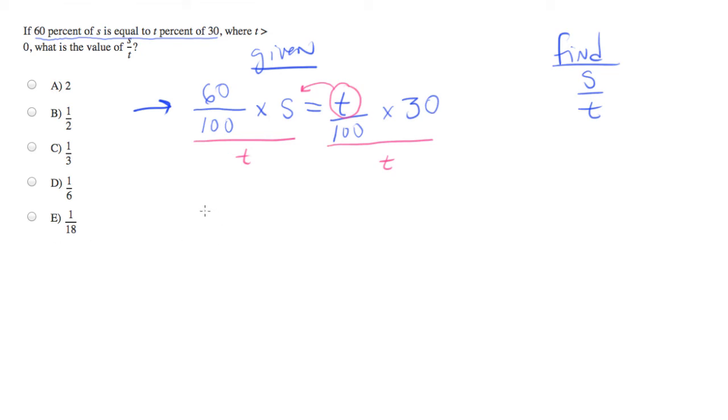And now we have 60 over 100 times s over t, that looks familiar, equals, these t's cancel out, 30 over 100.